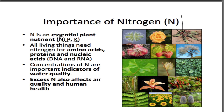Second bullet point: all living things need nitrogen for things like amino acids. Amino acids are the building blocks for proteins — muscles — and also nucleic acids. Nucleic acids are things like DNA and RNA. So automatically you should see we would not be here without nitrogen. Our bodies need that nitrogen in our cells, in the basic building blocks of our bodies. Nitrogen is a huge component of our cells.